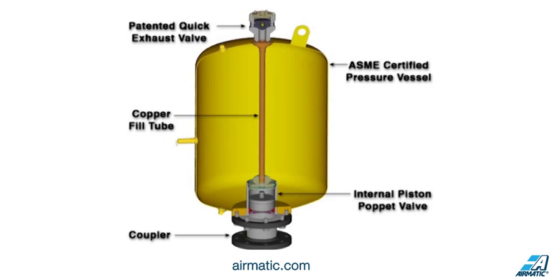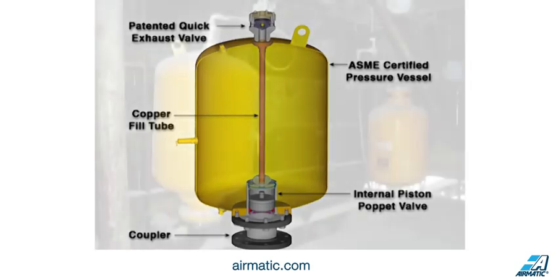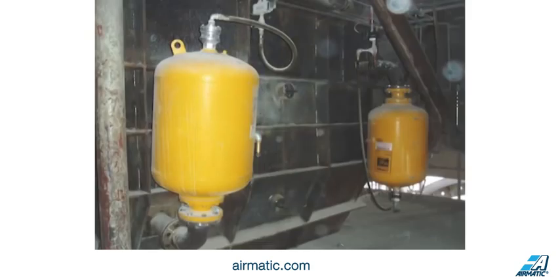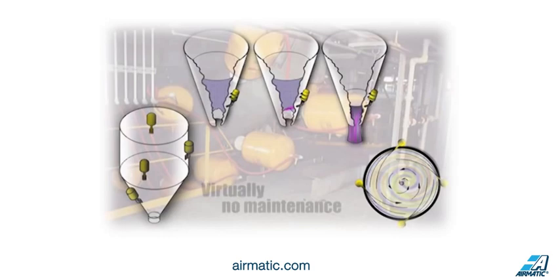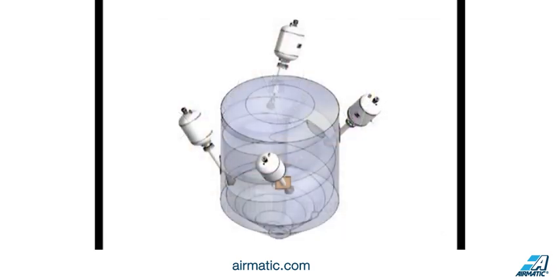What is an air blaster? An air blaster is an ASME certified pressure vessel that stores compressed air. By a combination of electrical and mechanical actions, the entire volume of compressed air is released instantaneously, providing a powerful, high-energy blast that is used to dislodge even the most difficult bulk materials.